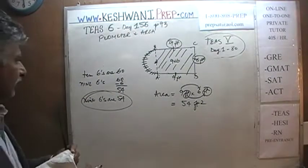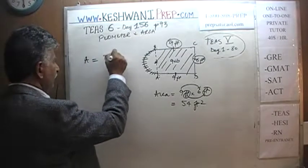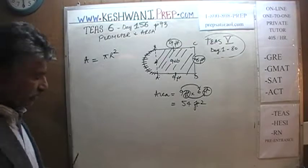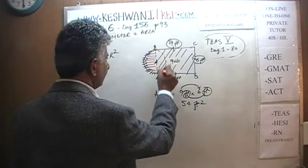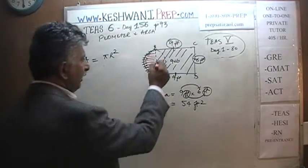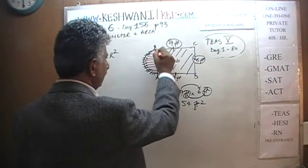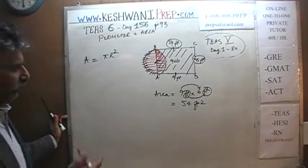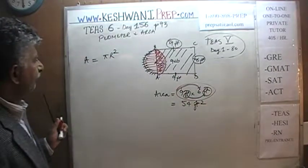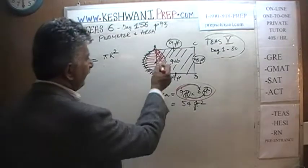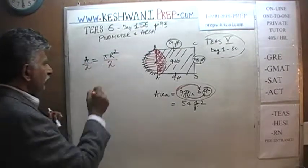Now let's figure out the area of half the circle. The area of a full circle is πr². But we only have half a circle — we don't want the whole circle or we'll end up double counting. We already counted the rectangular portion when we calculated the rectangle's area. So we divide πr² by 2 to get the area of just the semicircle.